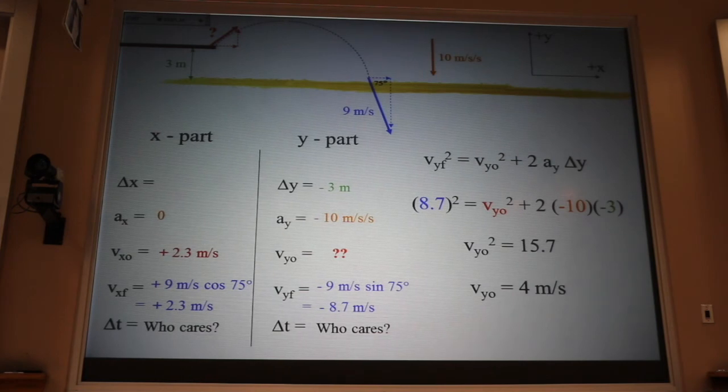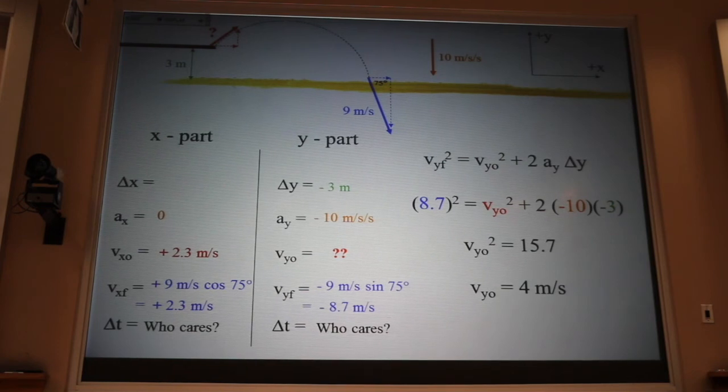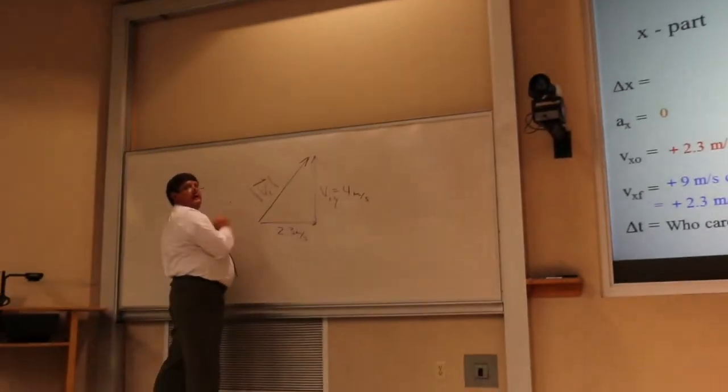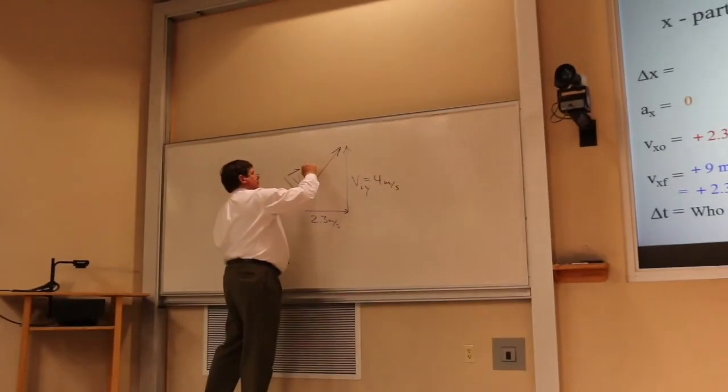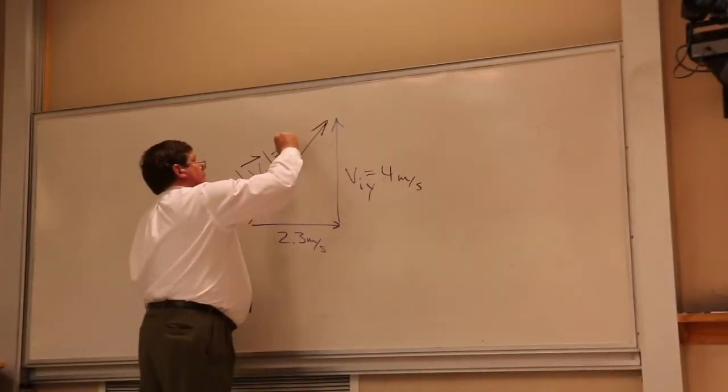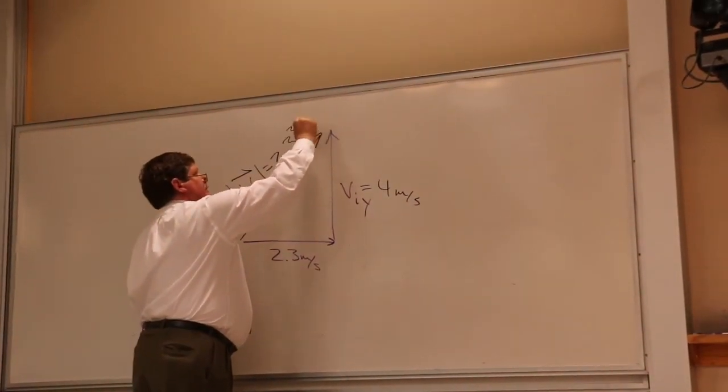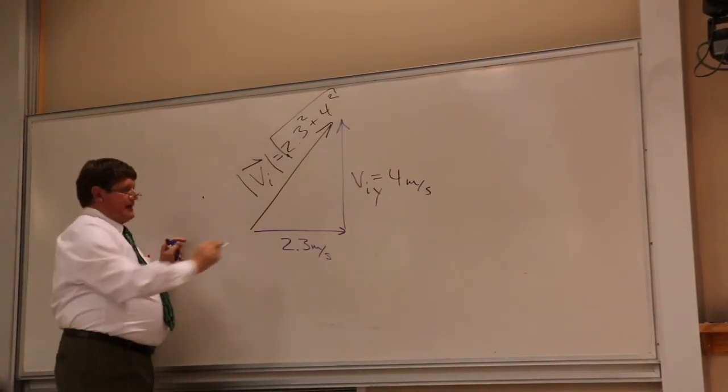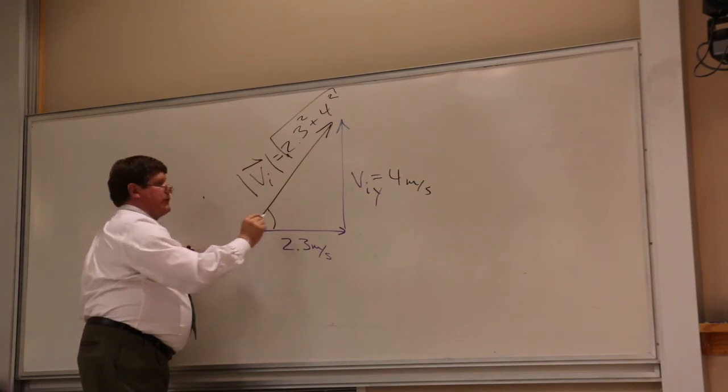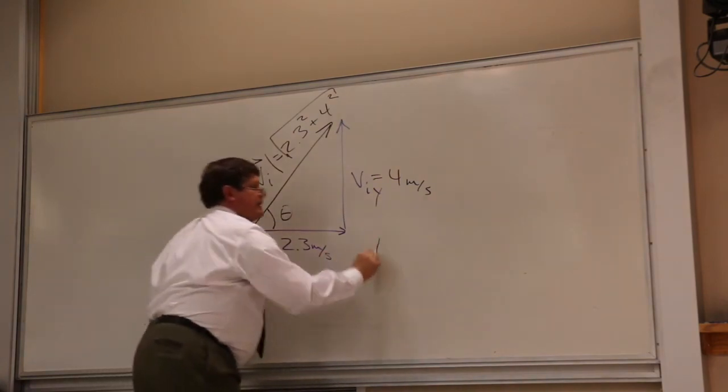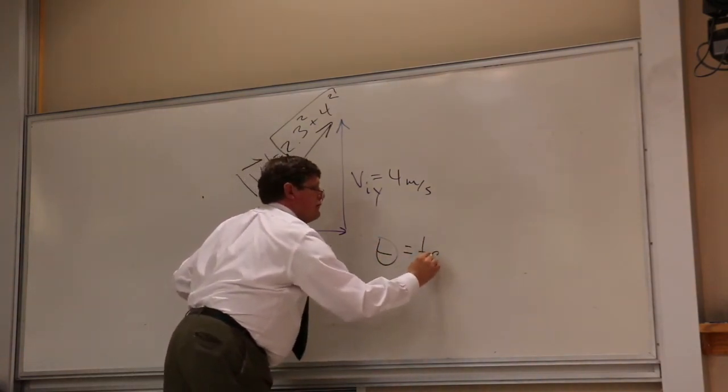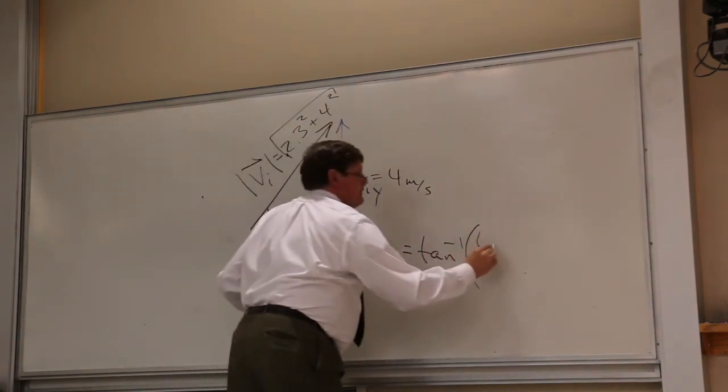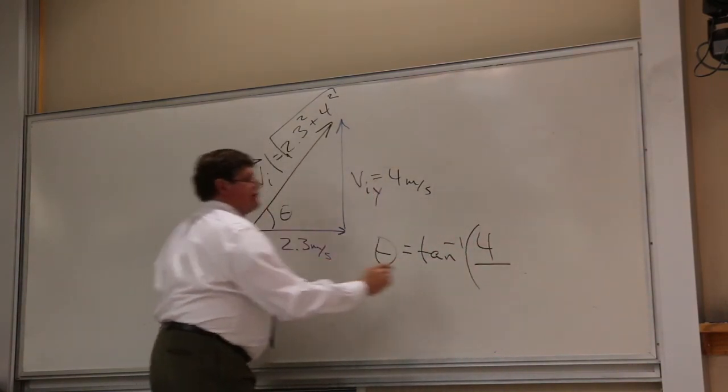Now, the speed. If she had a speedometer in her belly, the speed is the magnitude of this total velocity vector. And that's going to be, by Pythagorean theorem, 2.3 squared plus 4 squared square root. And if I had asked her at what angle she left the board, well, that would be given by the inverse tangent of the opposite side over the adjacent side.